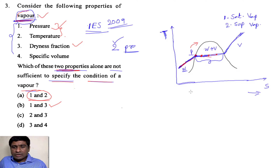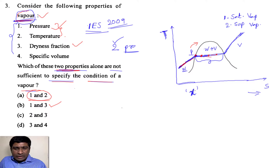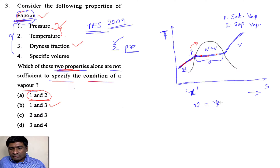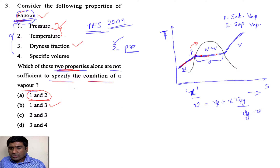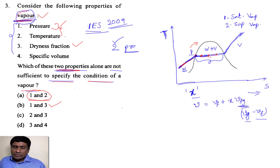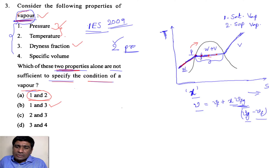What is the meaning of dryness fraction? That is the amount of water or vapour present in the mixture — the water plus vapour region — that is the dryness fraction. If you know the dryness fraction, we can calculate, for example, the specific volume V = VF + x · VFG, where VFG is the difference between the specific volume of vapour and that of liquid. So by knowing dryness fraction, we can calculate all other parameters and know the state of that fluid. By knowing properties 1 and 3, we can determine the state of the fluid.